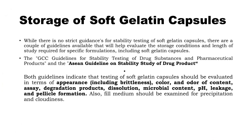When we talk about storage of soft gelatin capsules, there are no strict guidelines for establishing stability testing. The two reference guidelines are: the GCC guidelines for stability testing of drug substances and pharmaceutical products, and the ACN guideline on stability study of drug products. Both guidelines stress testing of certain characteristics such as appearance, color, odor, content, assay, degradation products, dissolution, microbial content, pH, leakage, and particle formation. These are both in-process tests and finished product tests, focusing on physical and chemical stability under accelerated as well as long-term storage conditions.